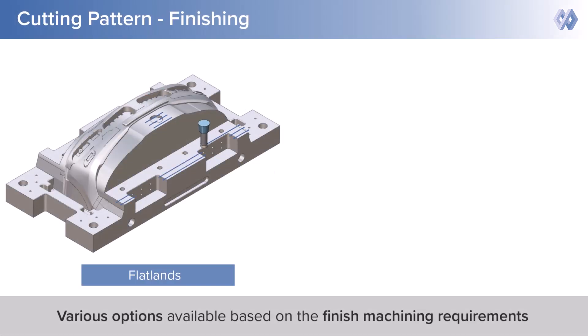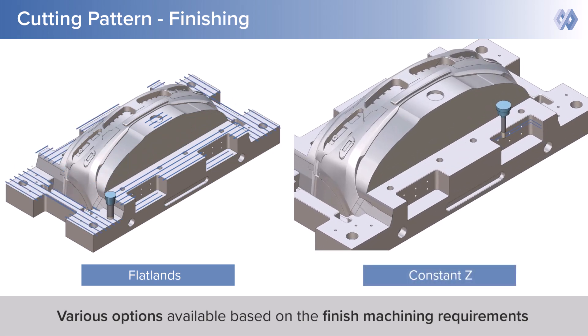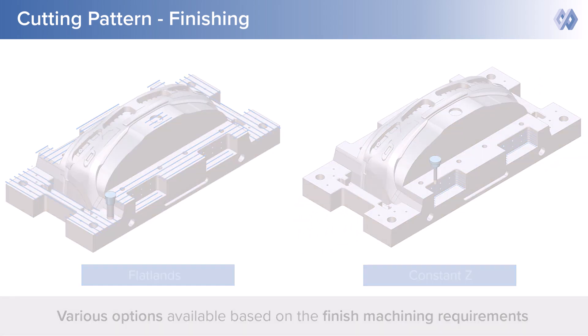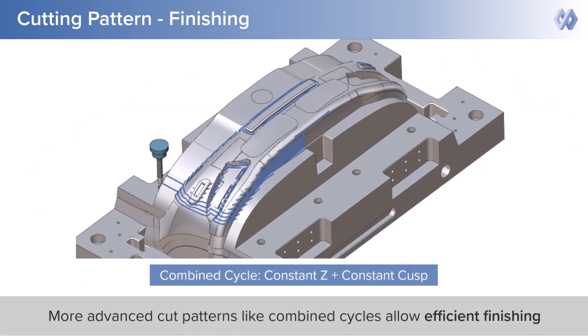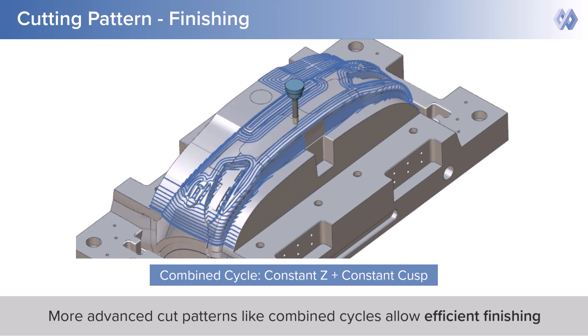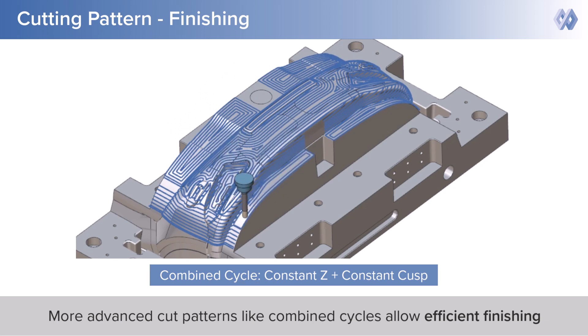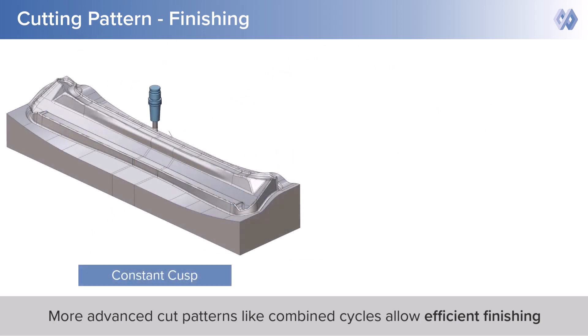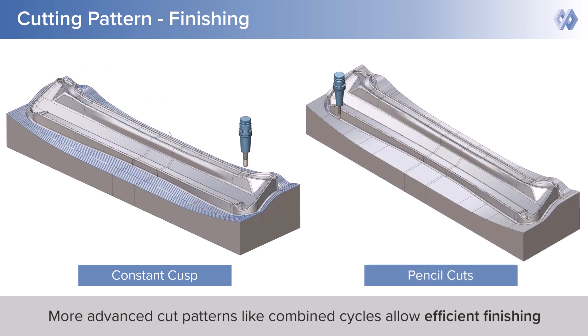Similar to roughing, our solution also provides many strategies for 3-axis finishing. Flatlands machines flat surfaces of the model with an end mill or butt nose cutter and is ideal for facing flat surfaces. Constant Z creates passes in the Z-axis at equal distances to get a better finish and is ideal for steep surfaces. Combined finishing strategies machine both shallow and steep portions of the part to get a superior finish in one go. There are two combined finishing strategies: Constant Z plus constant cusp, and Constant Z plus parallel passes. Constant cusp strategy generates toolpaths by offsetting the surface's silhouette at constant step-over, thereby providing better cusp removal and a superior finish.